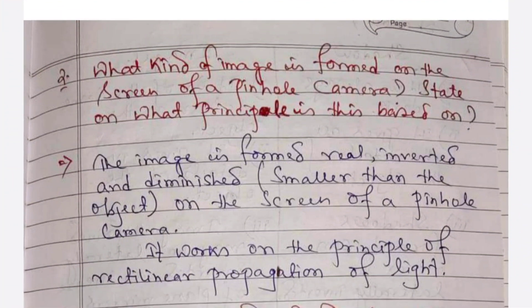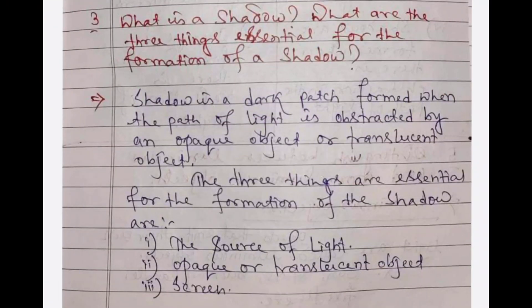What kind of image is formed on the screen of a pinhole camera? The image is real, inverted, and diminished — diminished means smaller than the object. It works on the principle of rectilinear propagation of light. What is a shadow? Shadow is a dark patch formed when the path of light is obstructed by an opaque or translucent object. The three things essential for the formation of a shadow are: the source of light, an opaque or translucent object, and a screen.